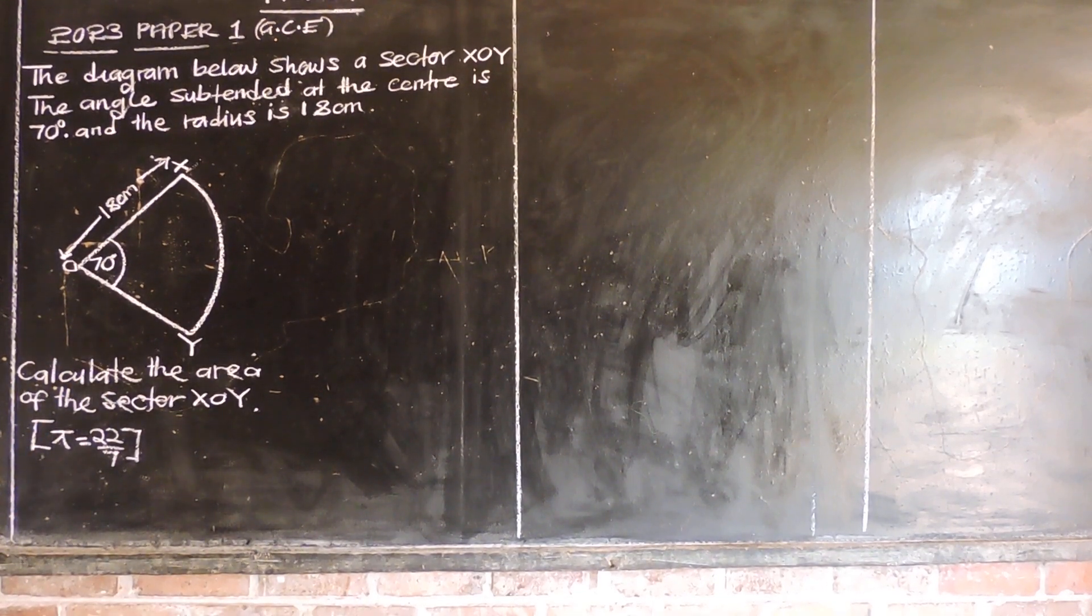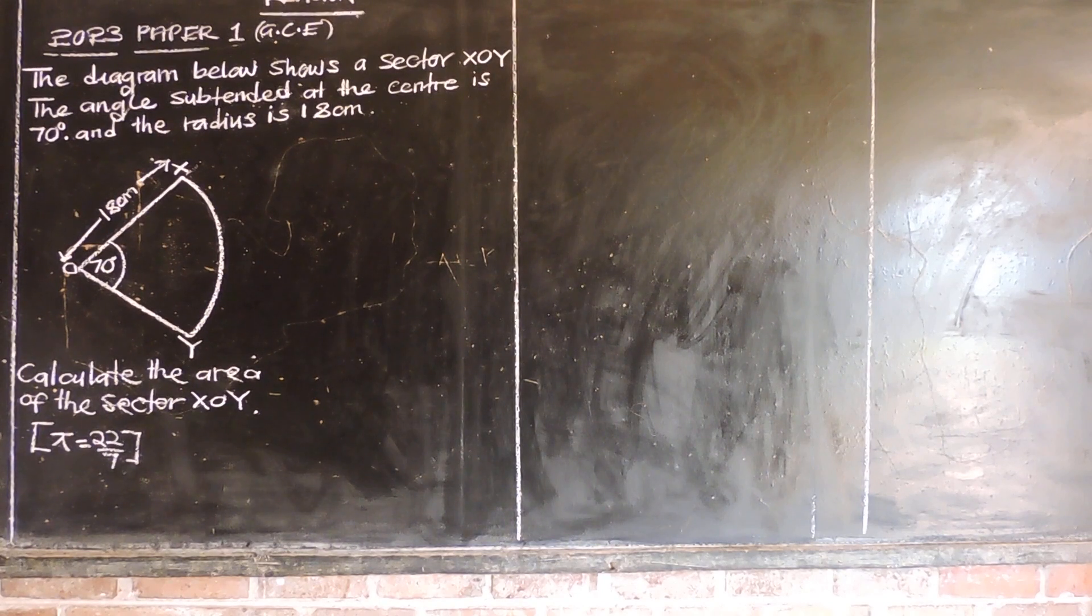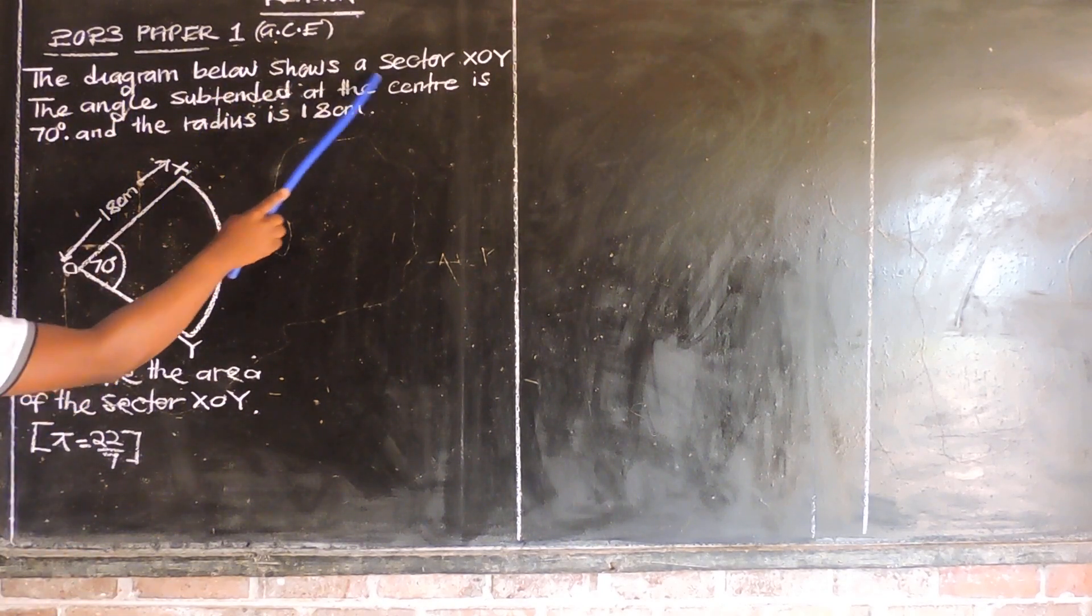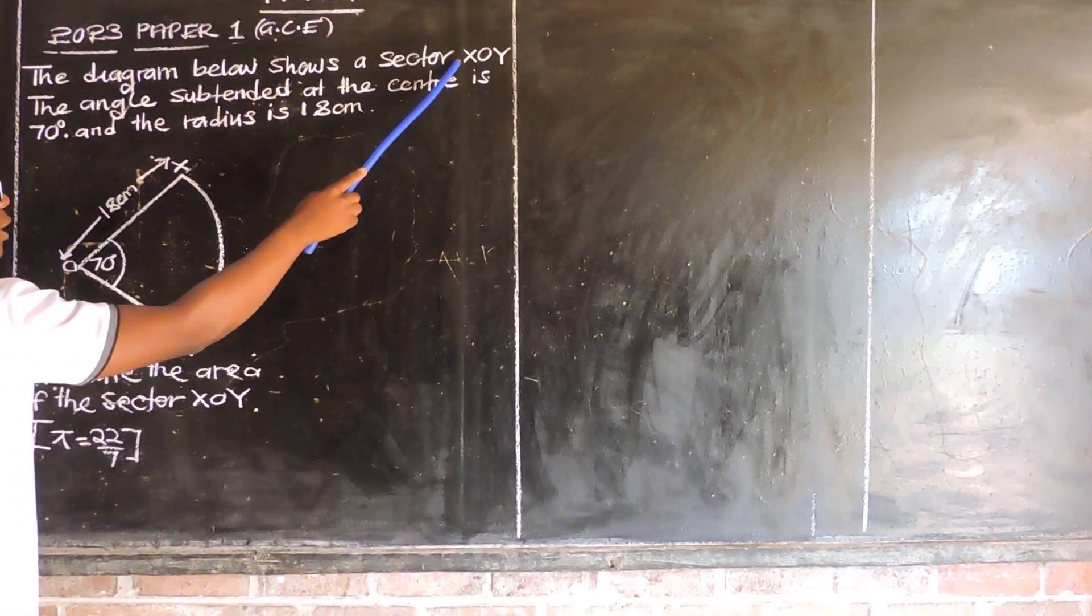So let's look at 2023 paper 1, the question on mensuration. It says the diagram below shows a sector which is X, O, Y.